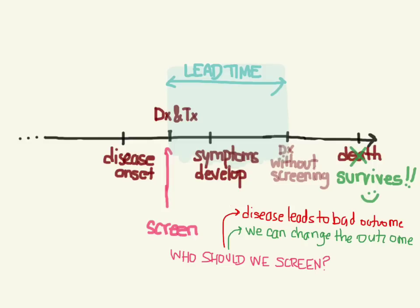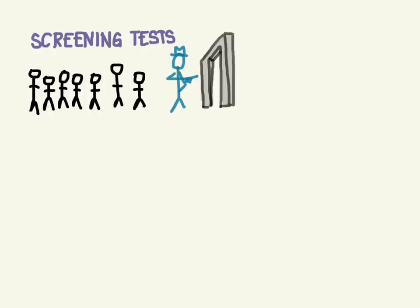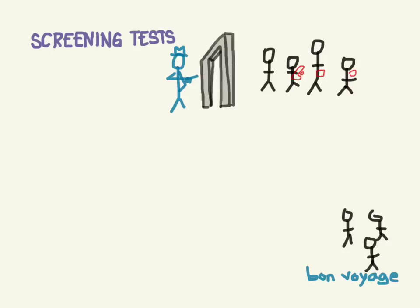Let's talk about screening tests and use airport screening as an example. Airport screening takes a population — in this case all the flyers — and what we want to screen for is the presence of any weapons. The bad outcome we're trying to prevent is a bad guy getting on the plane. So we have one guy who has a gun, one guy with a metal belt buckle, and one guy with a body piercing. As these guys go through the metal detector, the detector rings for all three of them. These are our positive tests; the others are our negative tests.